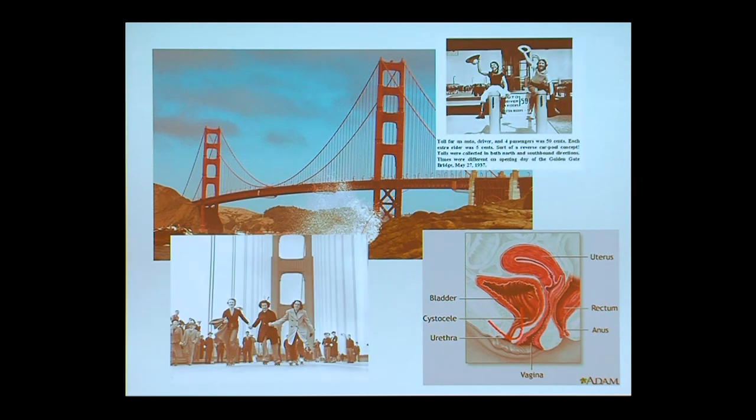When they're working well, everybody's happy — these pictures are from opening day of the Golden Gate Bridge. But when it's not functioning well, that's when it can lead to issues like incontinence.